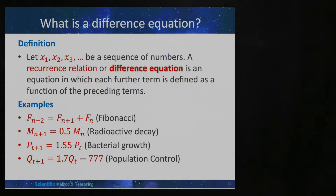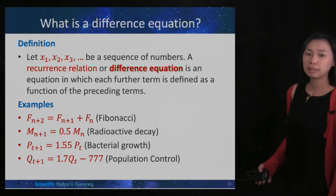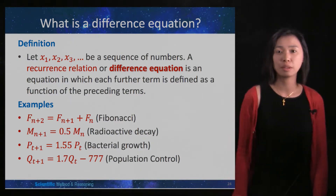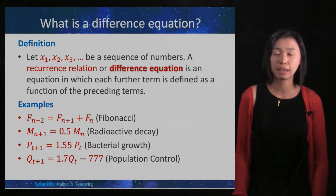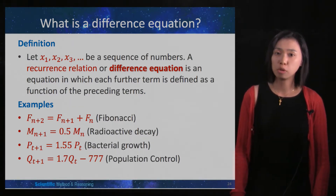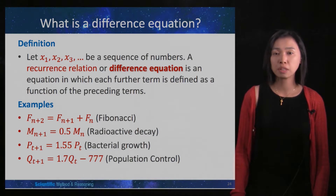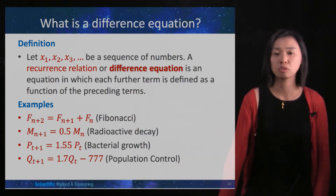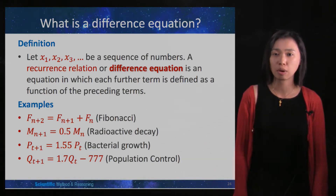Until now, you should be able to formulate the scenario, meaning that if we give you the problem of rabbits, radioactive decay, half-life of caffeine, bacterial growth, or population control, you should be able to write down a difference equation.